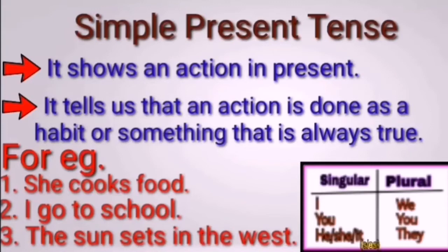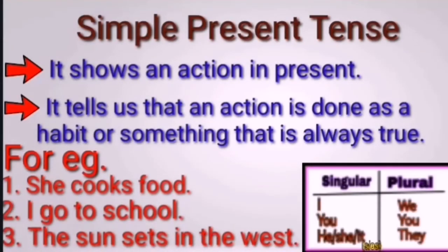In simple present tense we use the V1 form. The verb 'cook' becomes 'cooks' because 'she' is third person singular. In simple present tense, when the subject is third person singular — he, she, or it — we must add S or ES to the verb. First person singular 'I' becomes 'we' in plural; second person 'you' stays the same; third person singular 'he/she/it' becomes 'they' in plural.